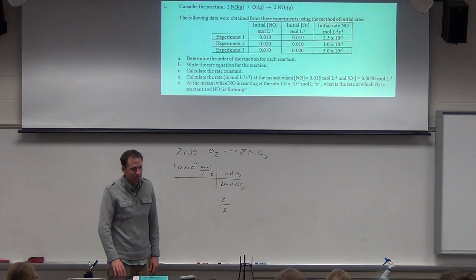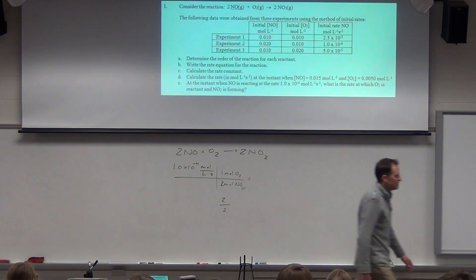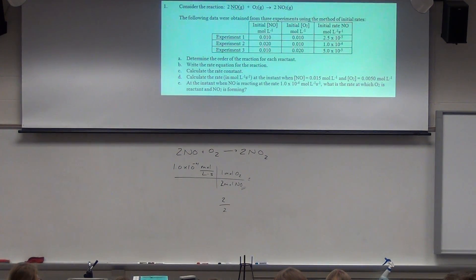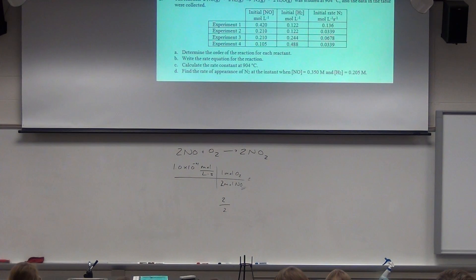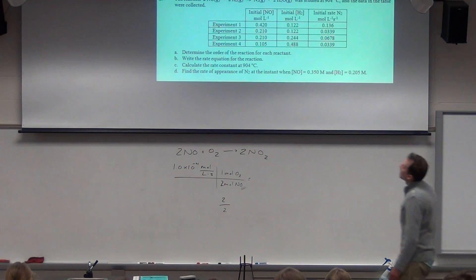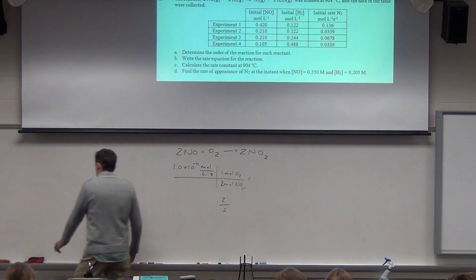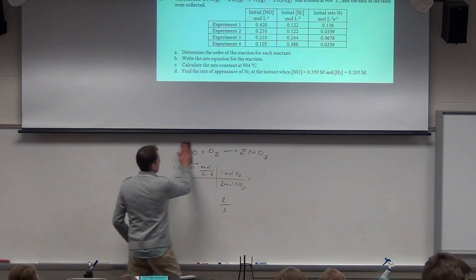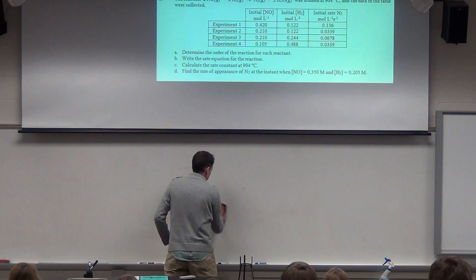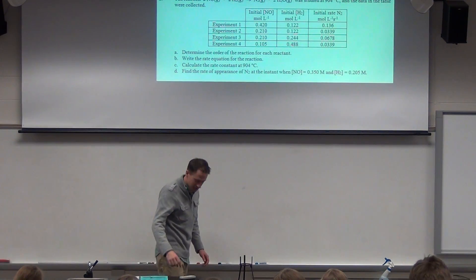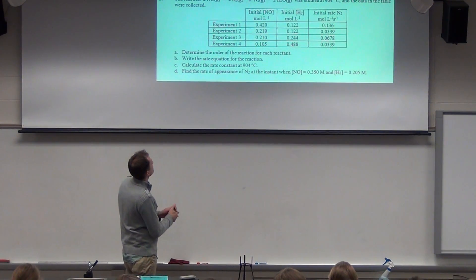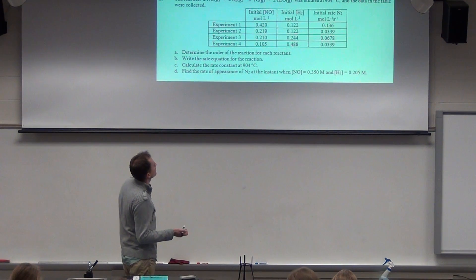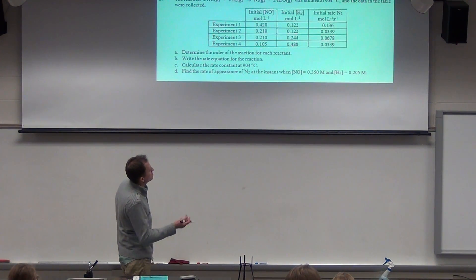Next question — 2D. We have a whole new problem there. You have to set it up and you can't skip around. What 2D is asking: find the rate of appearance of N₂ at the instant when NO and H₂ equal those given values. I can give you the generic part of it. It says find the rate of appearance of N₂ at the instant when NO and H₂ equal those concentrations.